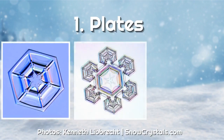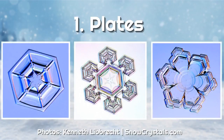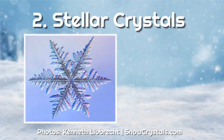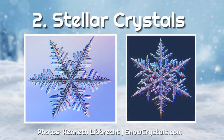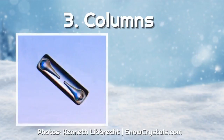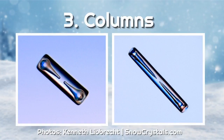Plates? They might be as simple as a flat hexagon, kind of reminding a plate, or form a bit more intricate shapes out of more hexagons. Stellar crystals? These mostly are the famous six-armed tree-like dendrites. Columns? As the name suggests, these look like six-sided small columns.